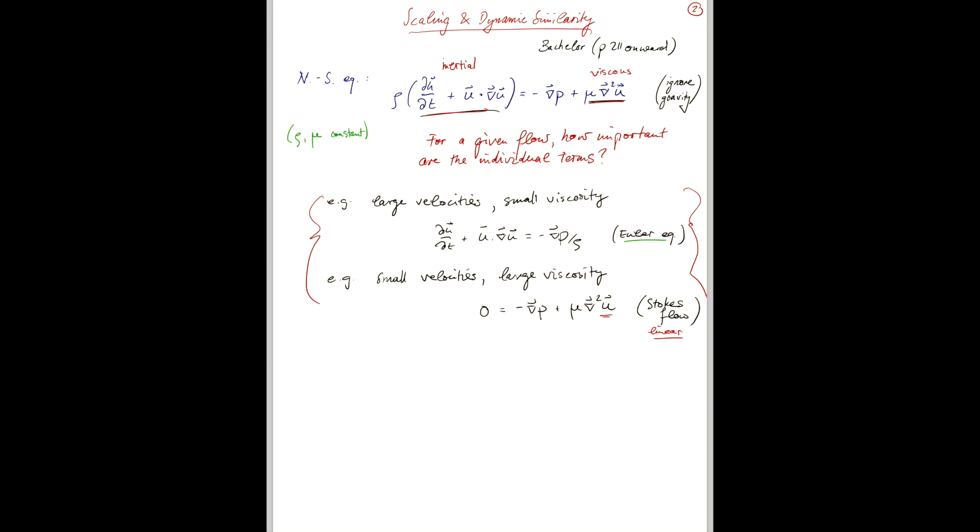Now, before I move on, let me just mention that the pressure term, the pressure gradient term, grad P, is typically a passive term that is essentially determined by the balance of the other two, of the viscous and the inertial term. So, really, what we're interested in is the balance of the density term, rho, and the viscosity term, mu.